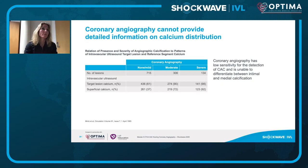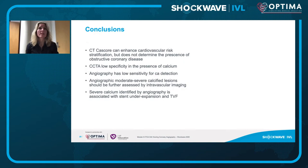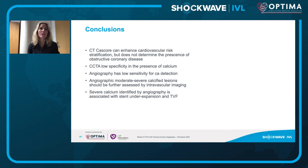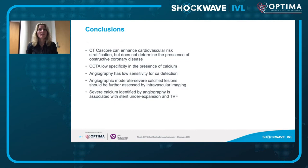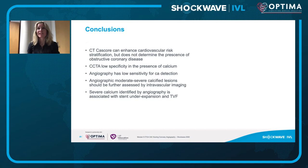Angiographically moderate-to-severe calcified lesions should be further assessed by intravascular imaging, while undetectable calcium is less likely to require calcium modification. Coronary angio has low sensitivity for calcium detection and is unable to differentiate between intimal and medial calcific distribution. The CT calcium score enhances cardiovascular risk stratification but doesn't determine obstructive coronary disease. Coronary angiography has low sensitivity for calcium, but when there is moderate-to-severe calcified lesion, this should be further assessed by intravascular imaging. Severe calcium on the angio is associated with stent underexpansion and target lesion failure. So no, it's not all about the angiogram — but it still plays an important role.